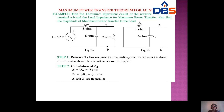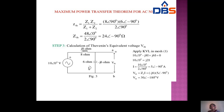To find ZTH: open the terminals and short the voltage source. Z1 (inductive) = J8 ohms and Z2 (capacitive) = −J6 ohms are in parallel. ZTH = Z1×Z2 / (Z1+Z2). Using polar form for multiplication and rectangular form for addition, ZTH = 24 at an angle of −90°.